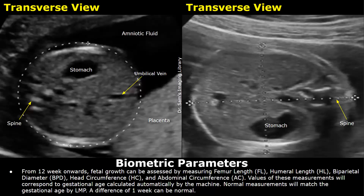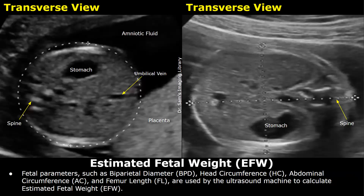For example, if the gestational age by LMP is 20 weeks, then the normal measurements of femur length, BPD, HC, and AC should also correspond to approximately 20 weeks. There can be a difference of 1 week or 10 days — some values may give 19 weeks and this difference is normal. The ultrasound machine can use the biometric parameters to calculate the estimated fetal weight, the EFW, which tells us whether the fetus is growing properly and whether the weight is appropriate for gestational age.